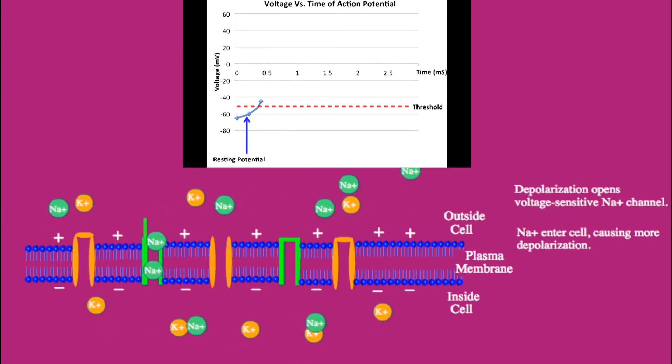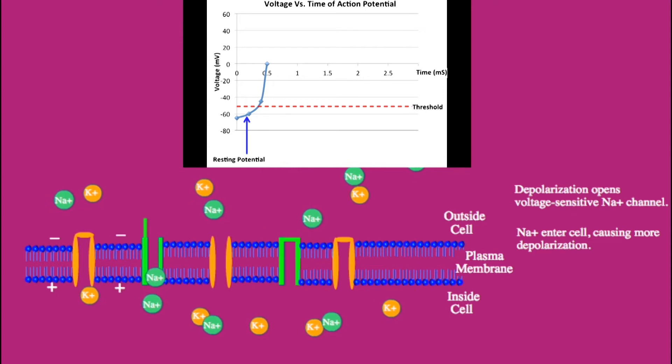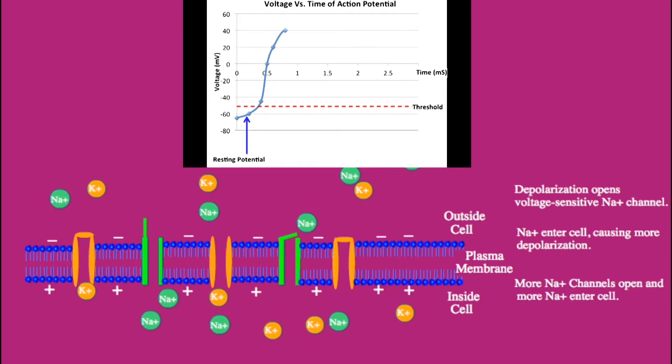As more sodium channels open, more sodium ions enter the cell. The peak of the action potential is then close to the equilibrium value of sodium which is about positive 55 millivolts.